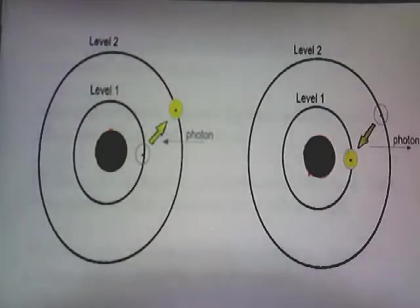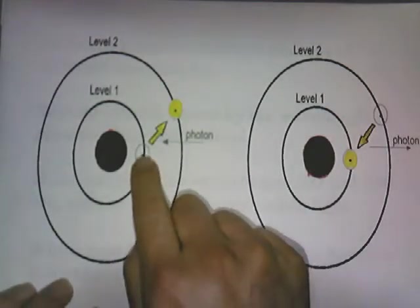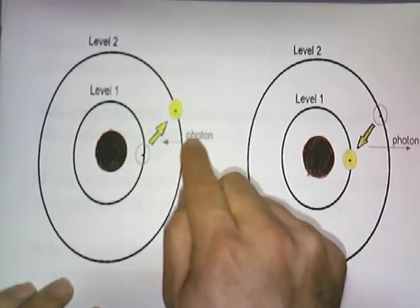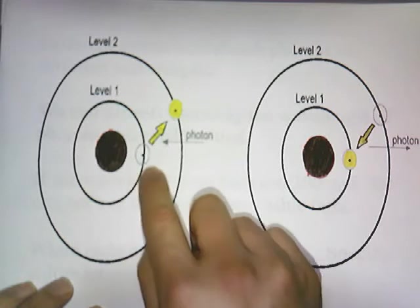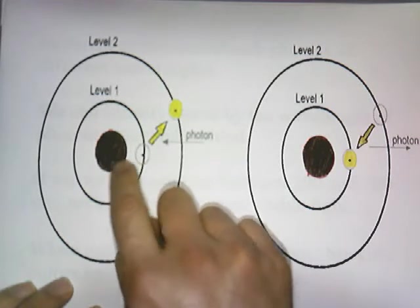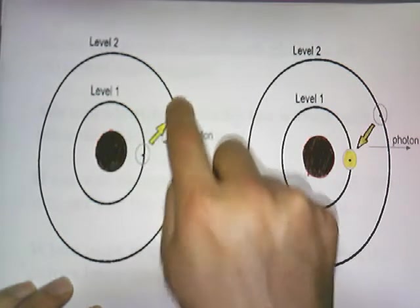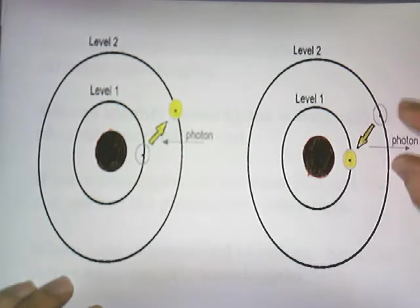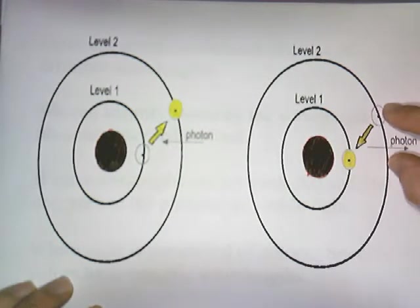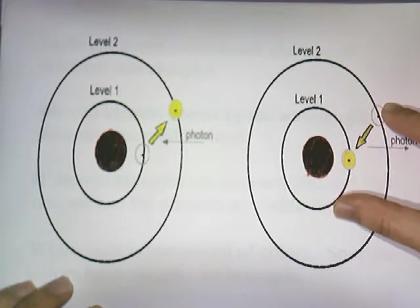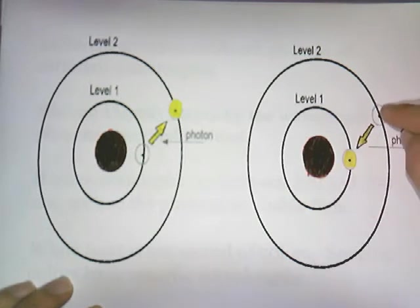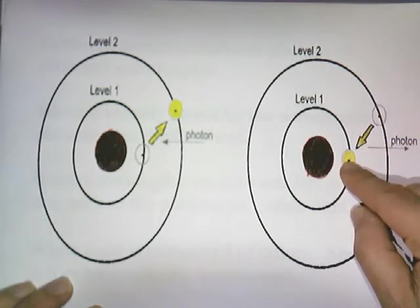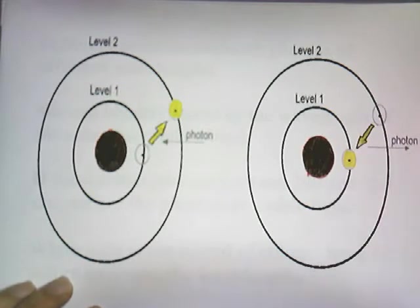Here's an electron. A photon comes in. The electron absorbs the photon, which gives it the energy to move away from the nucleus. This negative electron will move away from the positive nucleus and go to a higher energy level. But almost immediately, the electron — since it is attracted to the nucleus — will drop down from a higher orbital to a lower orbital. The negative electron is still attracted to the positive nucleus, so the electron drops to a lower energy level and in doing so gives off a photon.